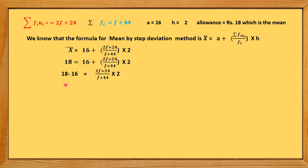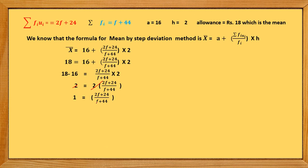The 2s cancel on both sides, giving 1 = (2f + 24) / (f + 44). By cross-multiplication: f + 44 = 2f + 24. Taking like terms: 44 − 24 = 2f − f, which gives f = 20. So the missing frequency is 20.